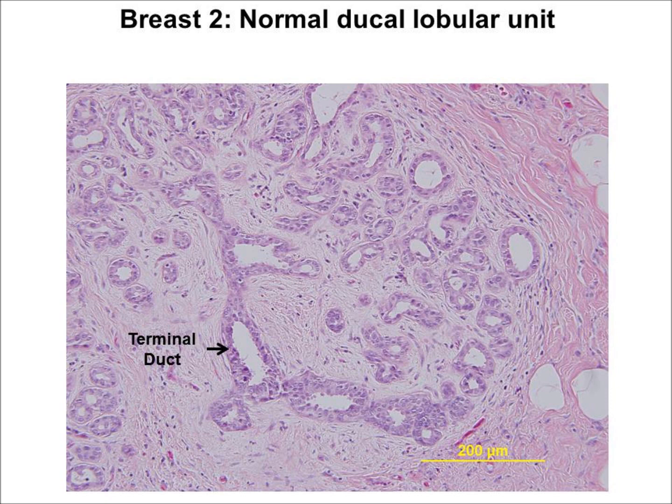Before showing slides of hyperplasia, I am going to show you this slide of a normal ductal lobular unit so you can better appreciate the difference. Note that the terminal duct shown here is one to two cell layers thick. You can tell this by looking at the location of the nuclei, since you cannot really see the cell boundaries under H&E staining.